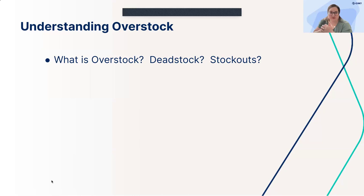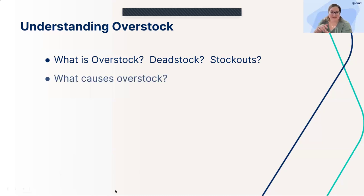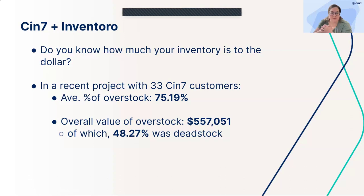So to recap: we've got overstock — too many products on the shelf. We've got dead stock — stock that's collecting dust because it's not selling. And then we've got stockouts — empty shelves of a particular product. We've already touched on what causes all of that overstock, so we're rolling into the next topic: what can we be doing about this?